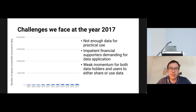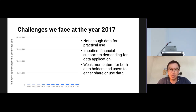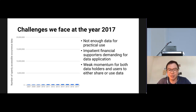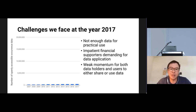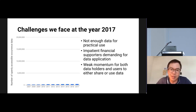What we really faced in 2017 was that we didn't have enough data for practical use — less than 1 million records. We also had impatient financial supporters demanding data applications, having already funded these databases for over 10 years. At the same time, we found weak momentum for both data holders and users to either share or use data. The future did not look very good at that time.